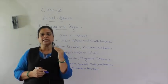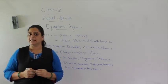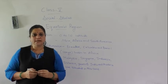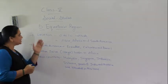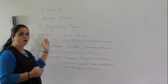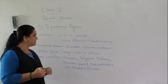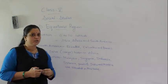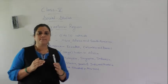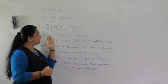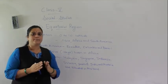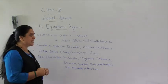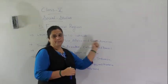As this region receives the direct rays of the sun, it is extremely hot and humid throughout the day. If we look at the map carefully, we will find that the equatorial region is spread across three continents: Asia, Africa, and South America.